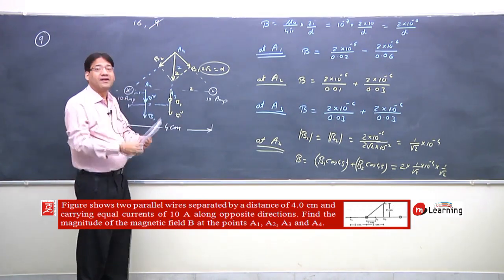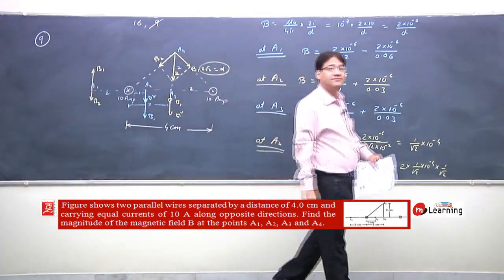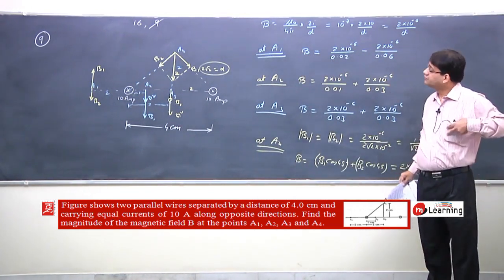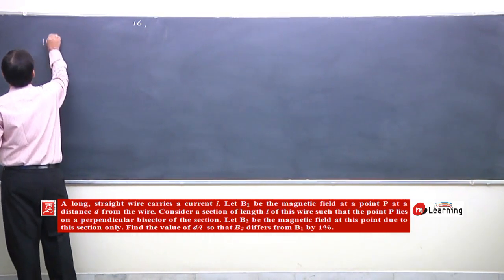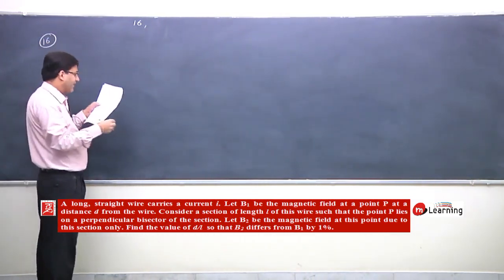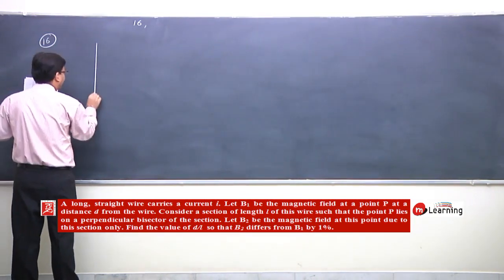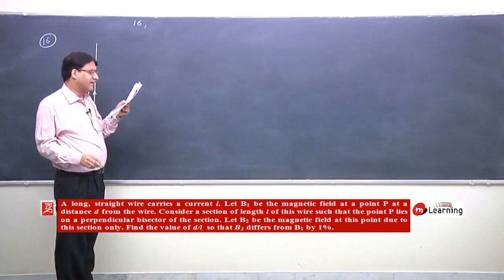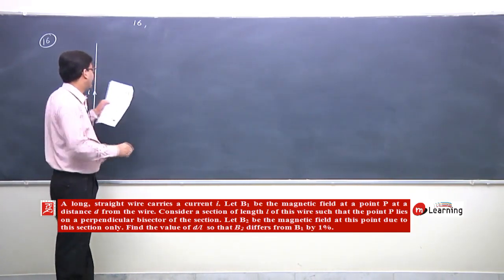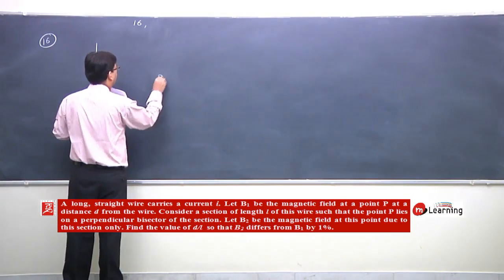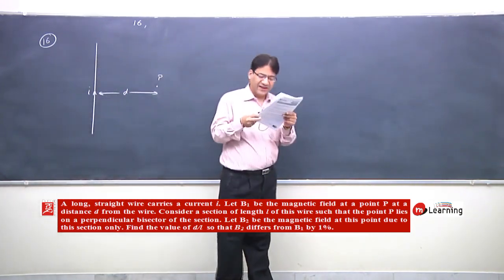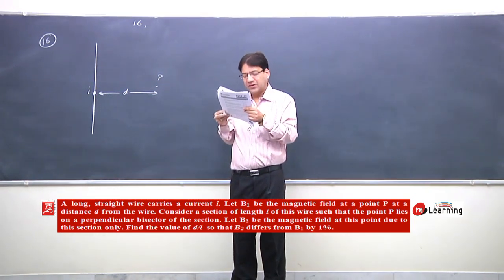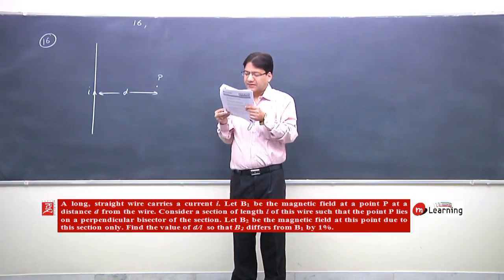Now we move to the 16th problem. An infinite wire carries current I. Let B1 be the magnetic field at point P at distance d from the wire. Consider a section of length L of this wire such that point P lies on the perpendicular bisector of this section. Let B2 be the magnetic field at P due to this section.